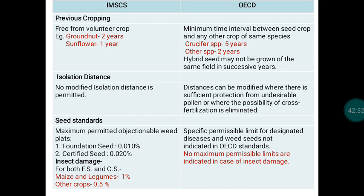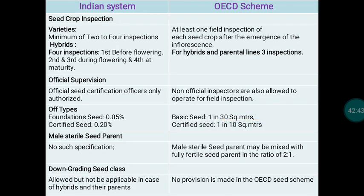Under OECD, no maximum permissible limits are specified for insect damage or diseased seeds. Regarding field inspection frequency: in IMSCS, two to four inspections are conducted. In OECD, at least one field inspection of each seed crop is required after emergence of the inflorescence. For hybrids in IMSCS, three to four inspections are normally done; in OECD, three inspections are mandatory for hybrids and parental lines.